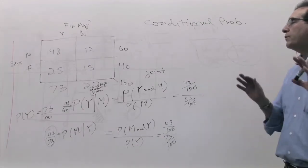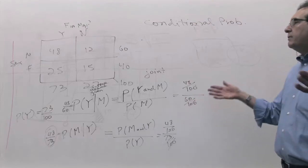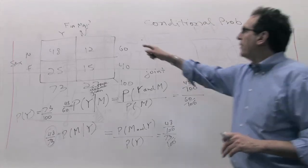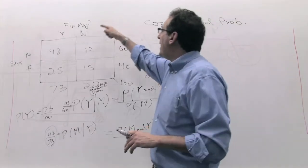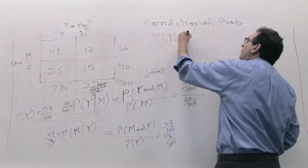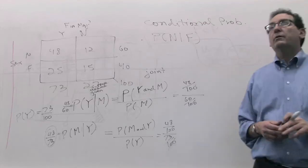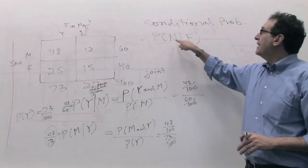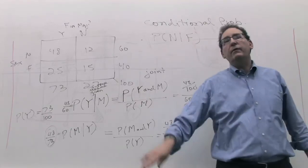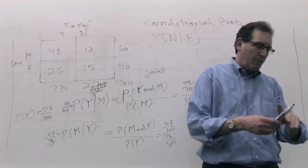Let's practice one more. Everybody should try to calculate P(N given F) — the probability of being a non-finance major given that the person is female. Try to do it both ways: by common sense and by the formula. What's the chance somebody is a non-finance major, given that the person is definitely a female?